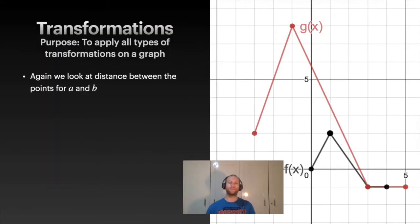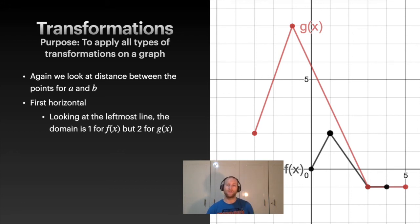For a and b, we're going to look at a comparison between points. First let's do horizontal. We're going to use the leftmost incline here. Notice for f(x) the domain is just one between those two points. G(x) it's two. So we went from one to two, so therefore we must have an expansion by two. But remember for b it's the weird reversal of the x values, so instead of timesing it by two you divide by two.